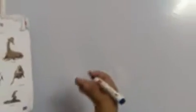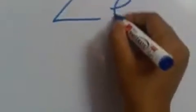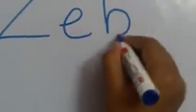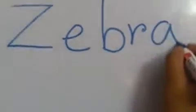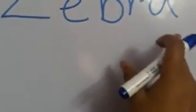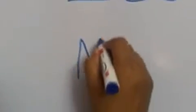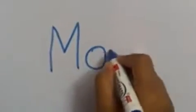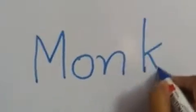In the previous video we already learned some names like elephant, lion, giraffe, and bear. But now we learn more names. That means zebra — say with me: Z-E-B-R-A, zebra. And monkey — M-O-N-K-E-Y, monkey.